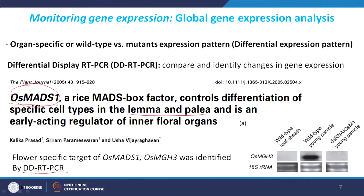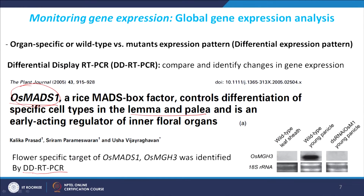This raised the question: if the gene is not present in this tissue, how is it regulating? One possibility was that maybe it is activating something, because at a very early stage it was expressed throughout the floral primordia. So it was hypothesized that it might be activating some early regulators at a very early stage whose expression is in the inner floral organs and regulating it. To identify such genes, differential display RT-PCR was taken up, and one such gene was identified — OSMGS3.